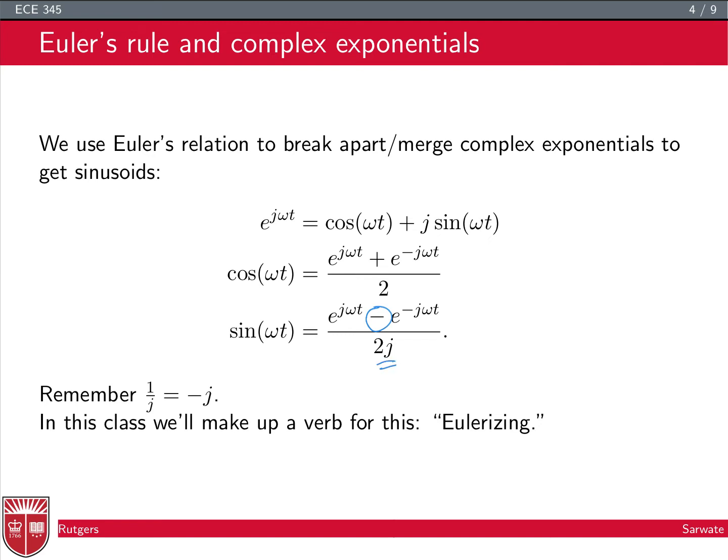And if you've seen a different form of this, it's likely that you saw a form where the j was in the numerator somehow. And that comes, you get that form by noticing that one over j is equal to minus j. And just to prove that, you cross multiply by j, and j squared is minus one, so you get one. So this process of breaking apart complex exponentials or merging them together to get complex exponentials, we're going to call this Eulerizing, so that we don't have to say every time, now we apply Euler's relation to the formula, we're just going to say, let's Eulerize.